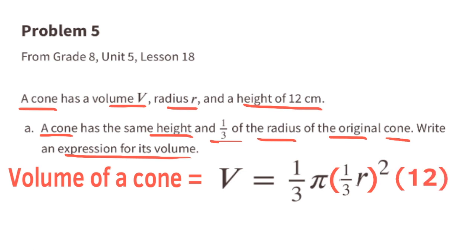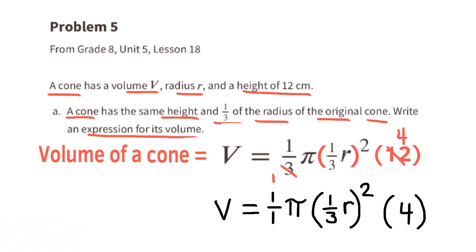The order of multiplication doesn't matter so we can do one-third of 12. One-third of 12 is 4. Let's look at the one over three times pi. That's the same as one times pi or pi. We can rewrite one-third r squared as one-third squared times r squared.